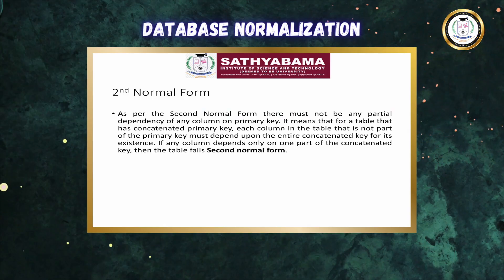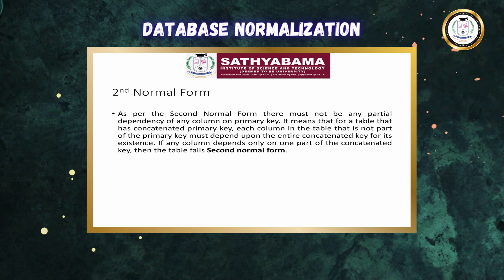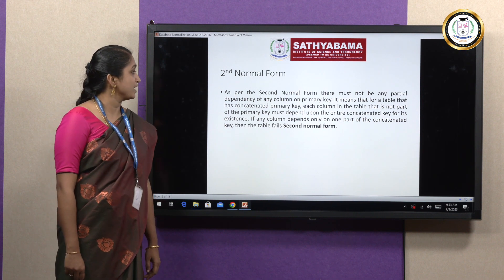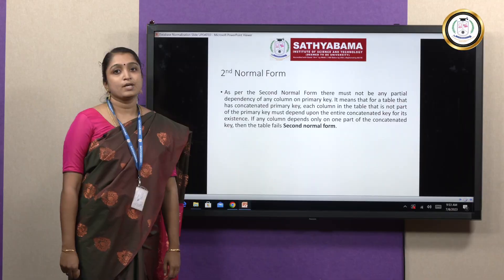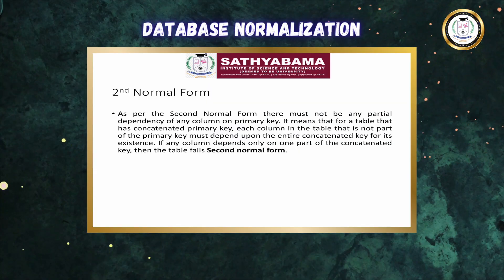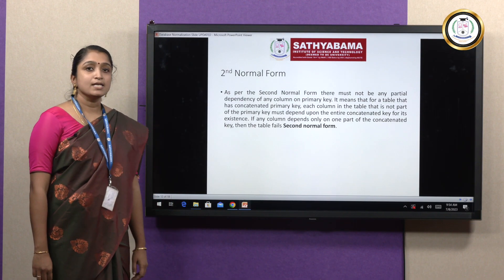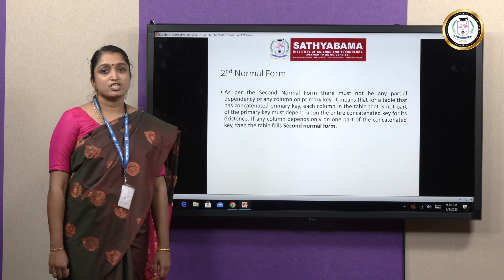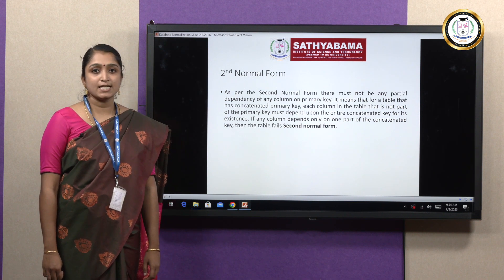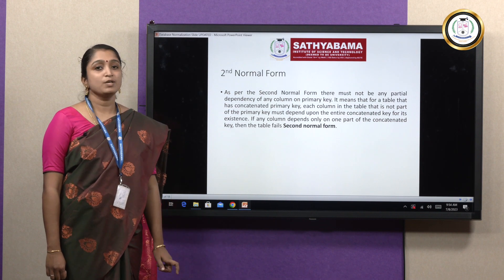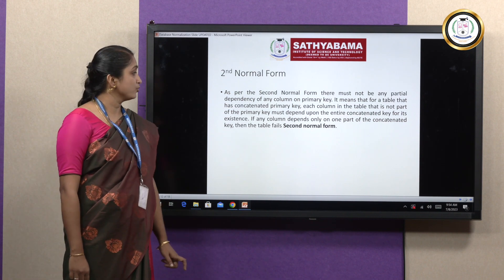Moving on to the second normal form. As per the second normal form, the table must be in first normal form, and there should not be any partial dependency on the primary key. If we have a concatenated primary key — that is, two columns together make a primary key — then all non-prime attributes should depend upon the entire primary key, not on a partial portion of it. That is the second normal form rule.